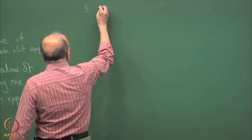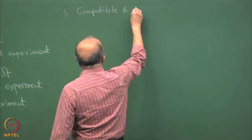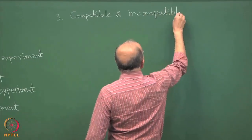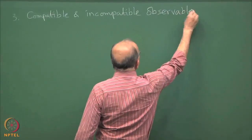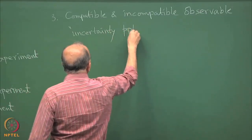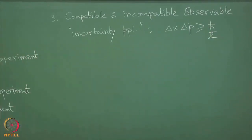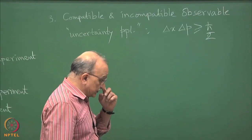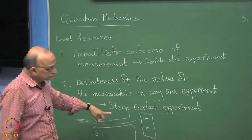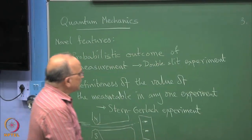The third thing is the mutual incompatibility of observables — compatible and incompatible observables. This is what we popularly call the uncertainty principle, because you have delta-x times delta-p greater than something. This basically says that x and p observations do not commute. This is also a feature of quantum mechanics which is tied to the definiteness: any experiment you do with x will make it collapse into a particular value of x. These 3 are the general features.